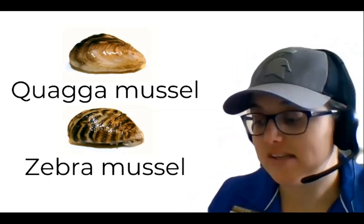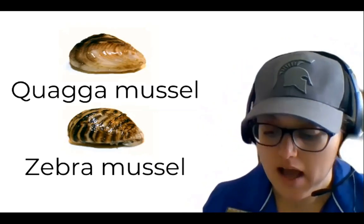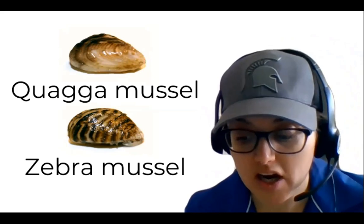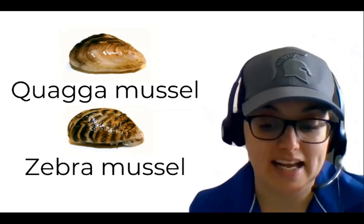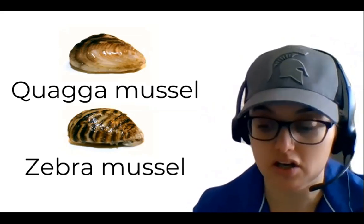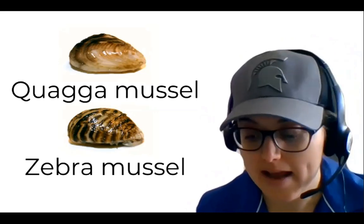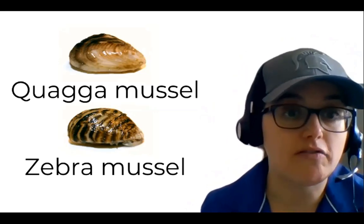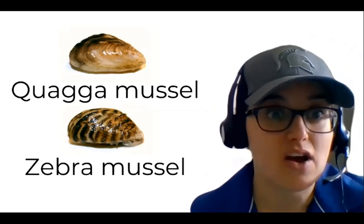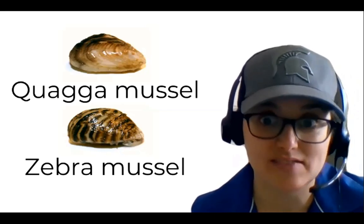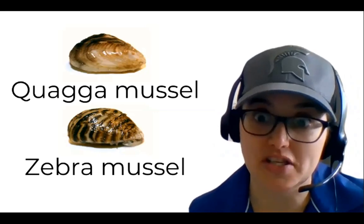These mussels are filter feeders and can grow to about two inches long. Each mussel can filter about a liter of water a day, and while filtering they eat plankton, which is an important food source for fish in the Great Lakes. These mussels can also clog water intake pipes and impact the ability for water to flow easily. Those intake pipes are really important because they serve as a way for us to get fresh drinking water from the Great Lakes, and it costs a lot of money to manage them.